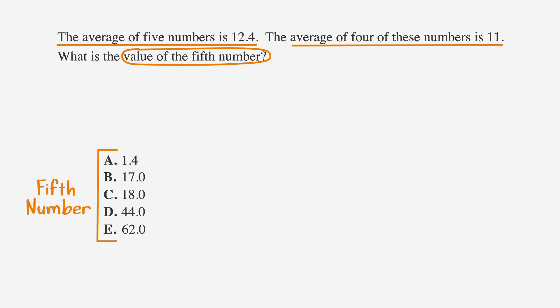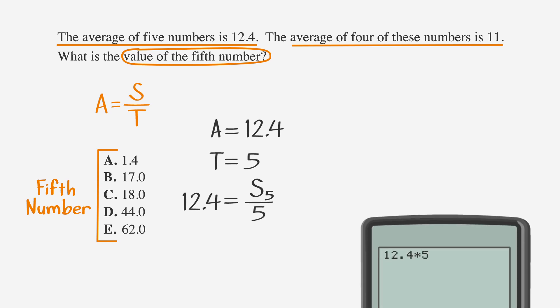Now you may have noticed that we have two different averages being presented in our problem. That means that we're actually going to need to use the average equation twice. Let's start with the first sentence. The average of five numbers is 12.4. Now let's use our shorthand formula for averages. We know that A equals 12.4 and T equals 5. We're looking for one of the numbers and to figure that out, we need to know the sum. If we plug into our average equation, 12.4 equals sum over 5. And if we solve for S by multiplying 12.4 by 5 in our calculator, we get a sum of 62.